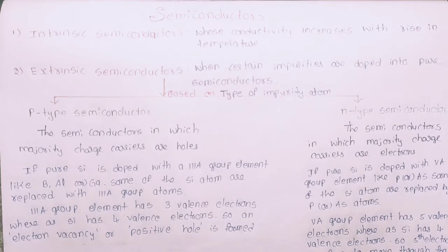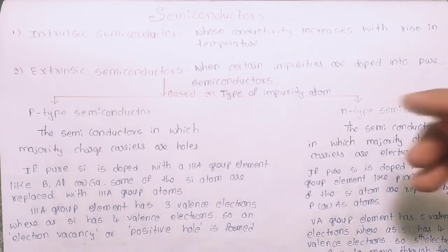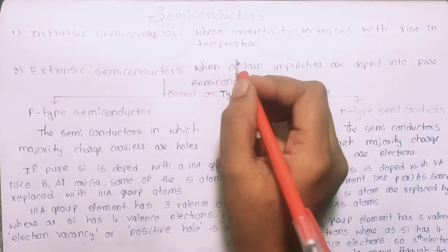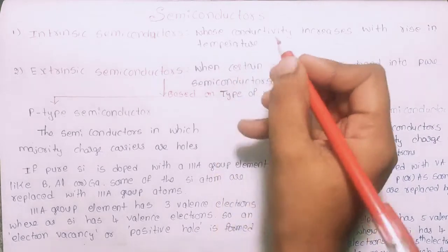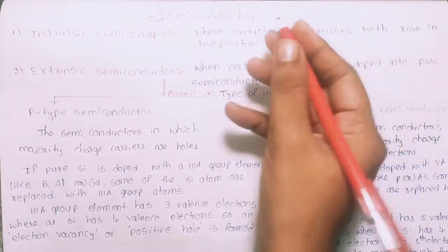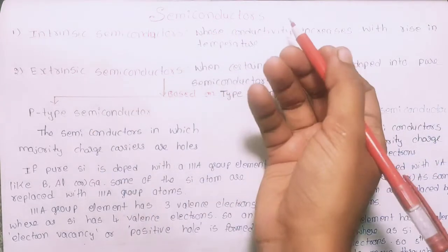The two types are intrinsic semiconductors and extrinsic semiconductors. Intrinsic semiconductors are pure semiconductors whose conductivity increases with a rise in temperature. For example, silicon and germanium.